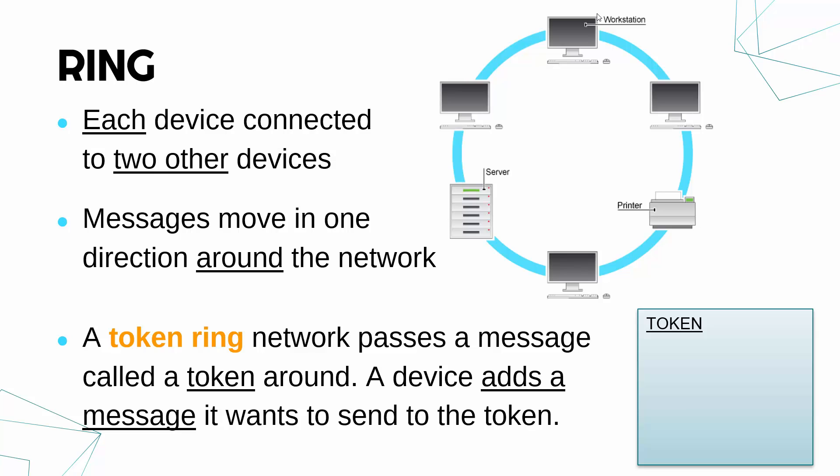When a device wants to communicate, what it will do is add a message to the token. So the token goes around, it's blank. When a device wants to send a message, it adds it to the token. It passes around, adding more messages as it goes. When the message gets to its intended recipient, the message will get removed from the token. So the token will just have messages being added, messages being removed as it goes through the network.